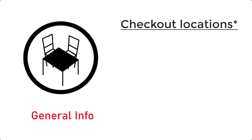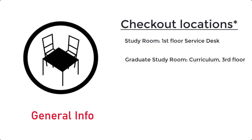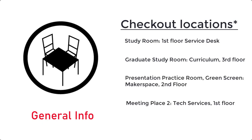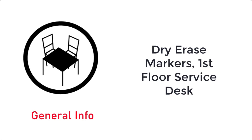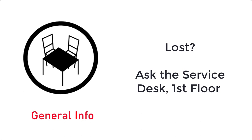The type of room that you have reserved will affect where you go to obtain your reservation. If you have selected an individual study room, you will go to the first floor service desk. If you have reserved a graduate study room, you will go to the third floor curriculum desk. If you have reserved Meeting Place Two, a presentation practice room, or the makerspace green screen room, you will go to the makerspace desk on the second floor. Dry erase markers are checked out at the service desk on the first floor. And if you are unsure of where your reserved room is, the first floor service desk can provide a map and directions to your room.